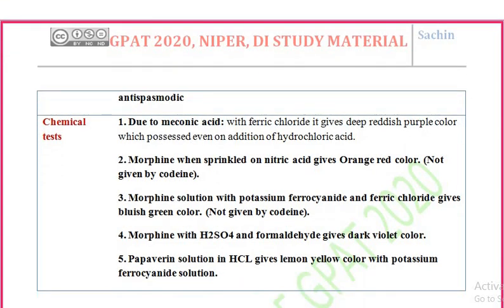The chemical tests for opium alkaloids: the first test involves the taste due to the presence of meconic acid. When morphine is sprinkled on nitric acid, it gives an orange-red color. This test is not given by codeine.